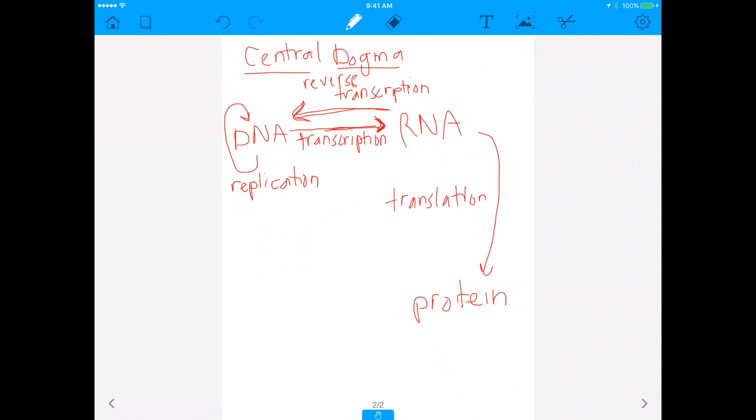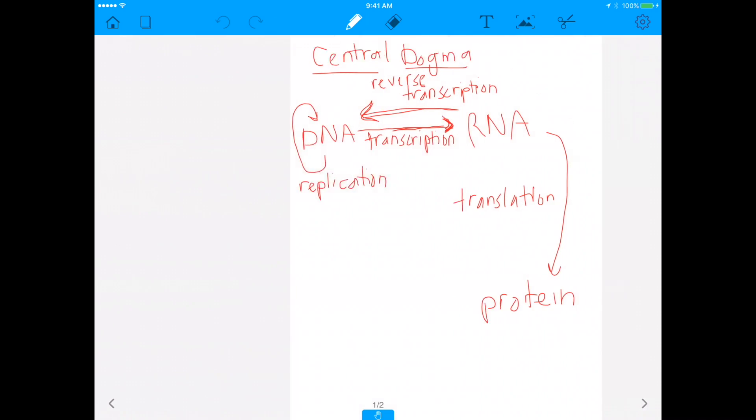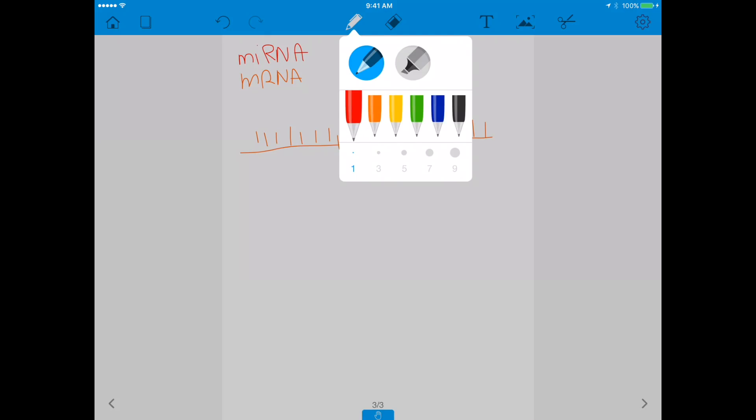So now, remember, the question is essentially asking, what part of this central dogma is being regulated by microRNAs? So let's make sure we understand how microRNAs work. MicroRNAs, I'm going to draw—microRNAs in this picture are going to be red. And the other thing that I'm going to do is I'm going to make mRNAs orange. So let's say we have this mRNA.